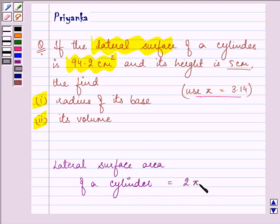2πrh. That is the lateral surface or the curved surface area of a cylinder. So the knowledge of this formula is the key idea to this question.